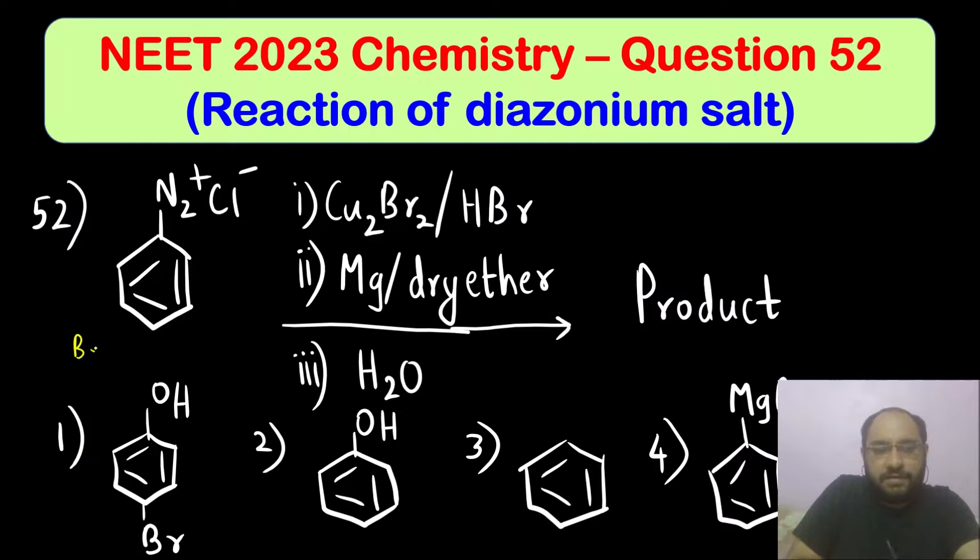This is which compound? This is benzene diazo, diazo means two nitrogen group. This is diazonium group.